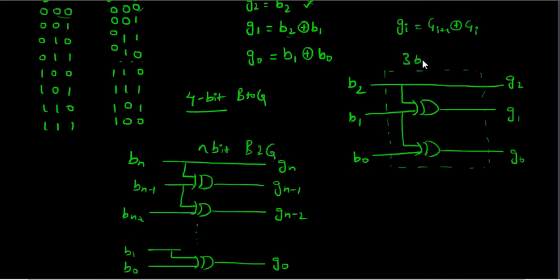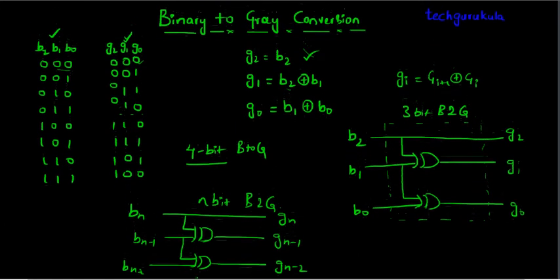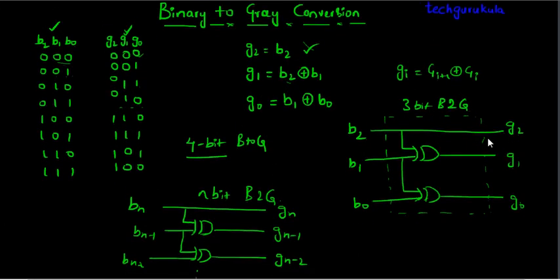And this is 3-bit binary to gray code converter. In the next videos we will see other type of conversions. If you like the video please do subscribe and thanks for watching.